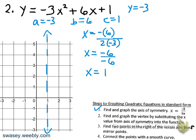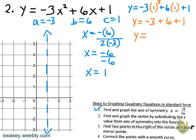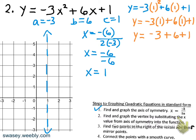We plug x equals 1 into the equation y equals negative 3x squared plus 6x plus 1. Using order of operations: 1 squared is 1; multiplying left to right gives negative 3 and 6; then adding and subtracting left to right: negative 3 plus 6 is 3, and 3 plus 1 is 4. So we have a vertex at (1, 4).